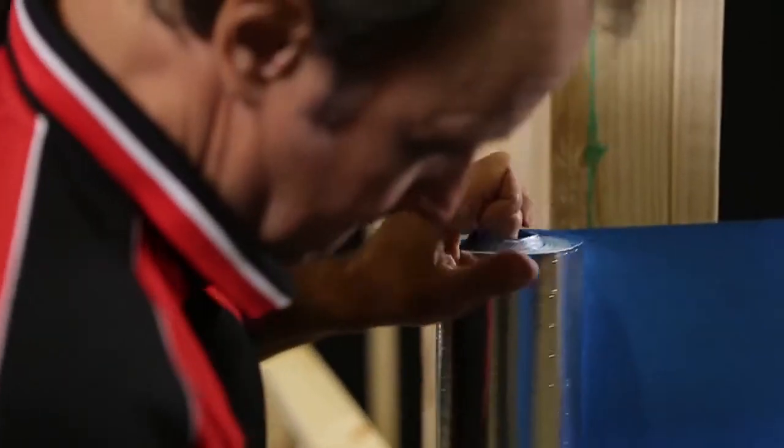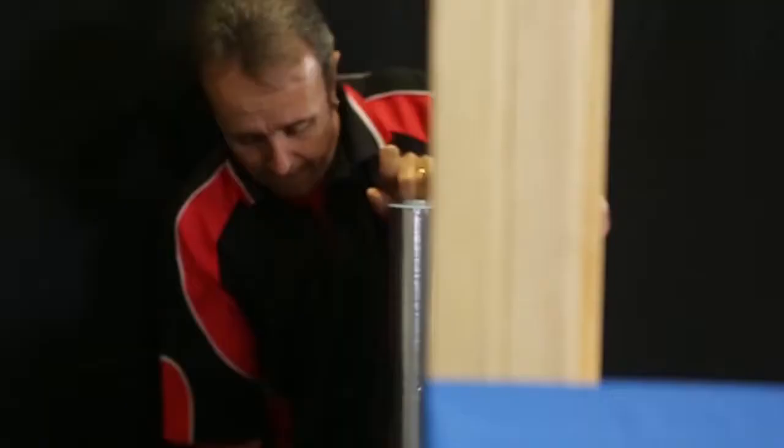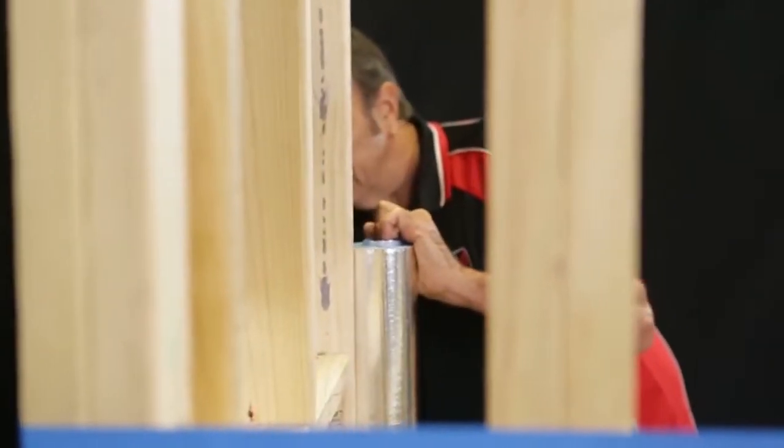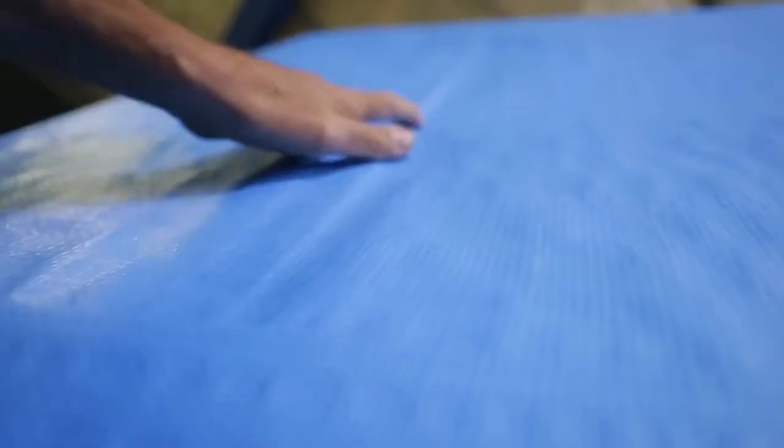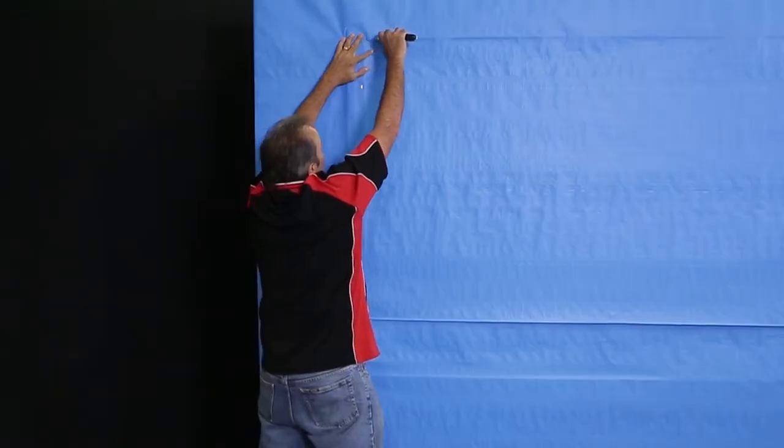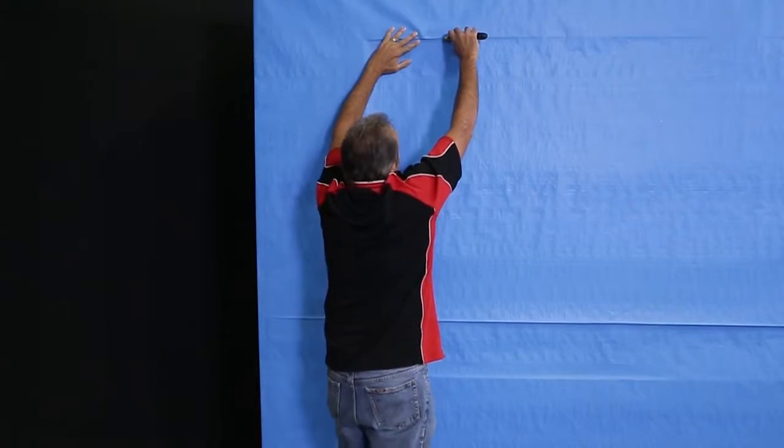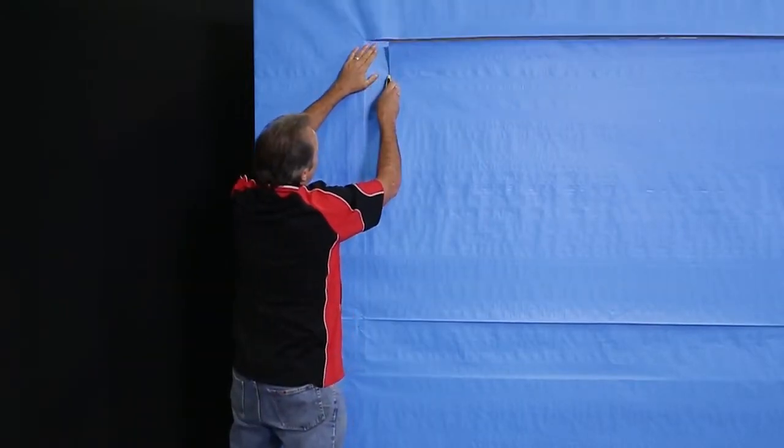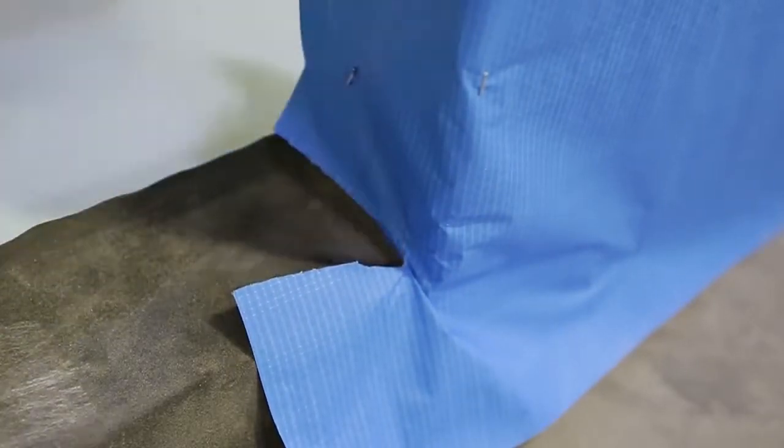Next we need to install the sarking. Feel for the opening from the outside. At the head, we cut the sarking off flush with the opening. Cut about 100 millimetres in from the stud and fold back in like this and staple in place.